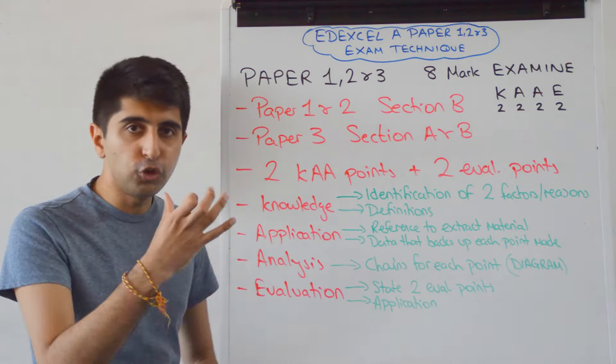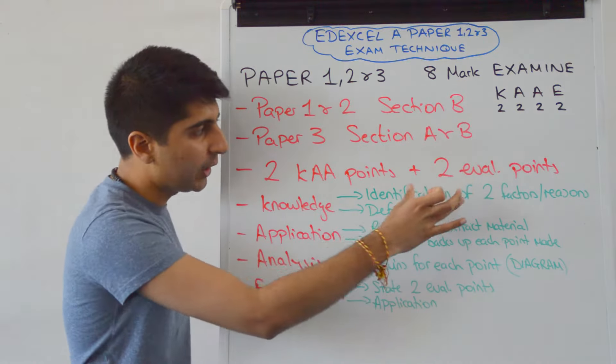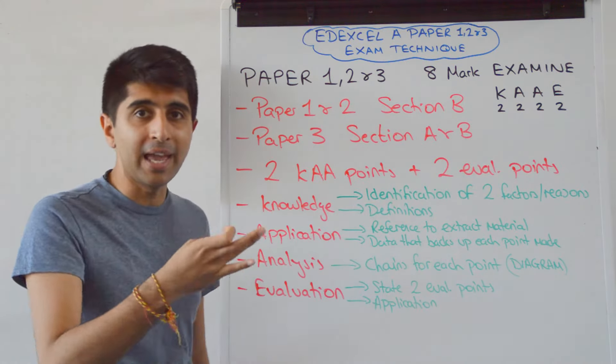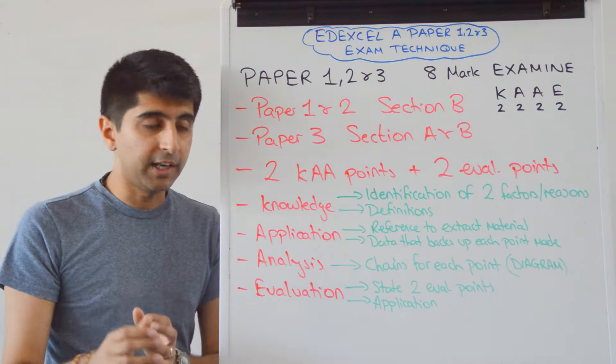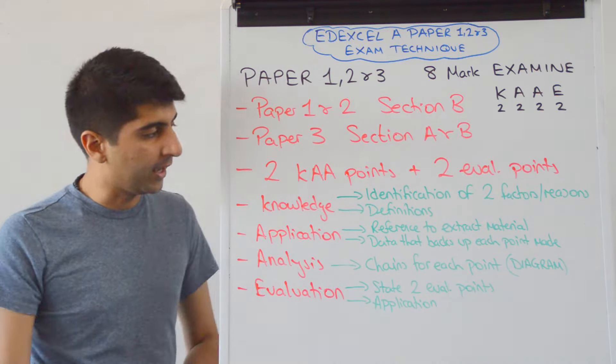All you need to do is write down two KA points and then two evaluation points, one for each KA point you mentioned. So simply two paragraphs done perfectly with all four key skills and you've got your marks.